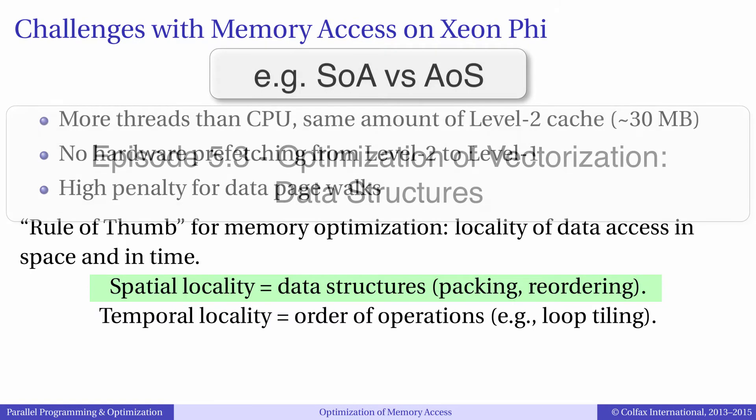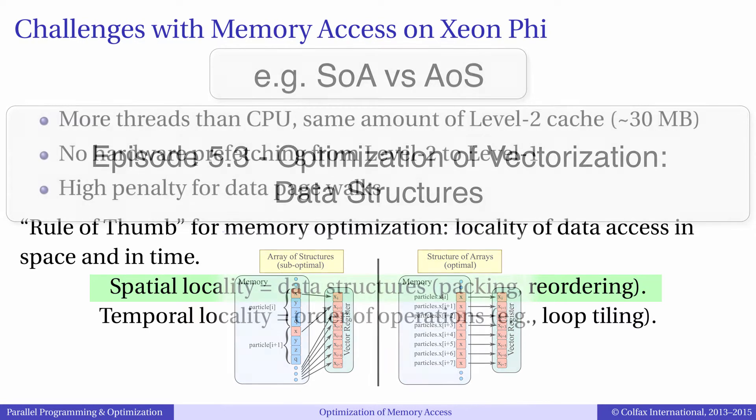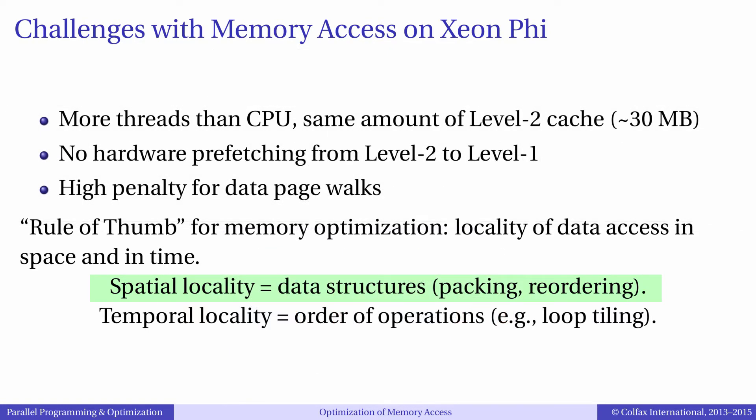For example, recall the module where we optimized Coulomb's law calculation by changing data structures from an array of structures to structure of arrays. In this example, we actually optimized memory traffic by improving the spatial locality of data.